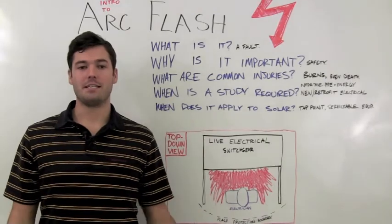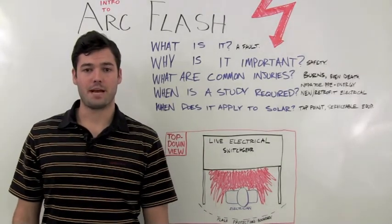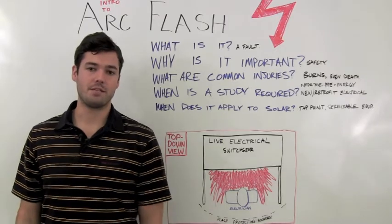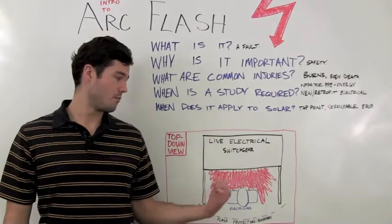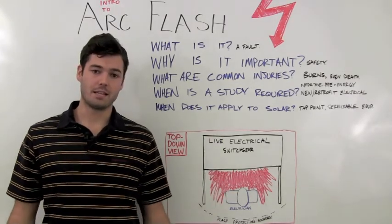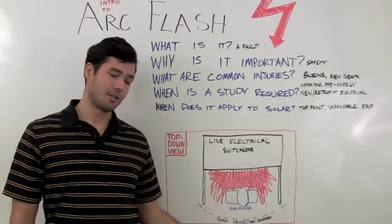An Arc Flash event is an event that occurs when we have a low impedance pathway that connects two different voltages. A great example of this is lightning. However, what we're concerned with is when we have a lightning-like event occur in live electrical switchgear.